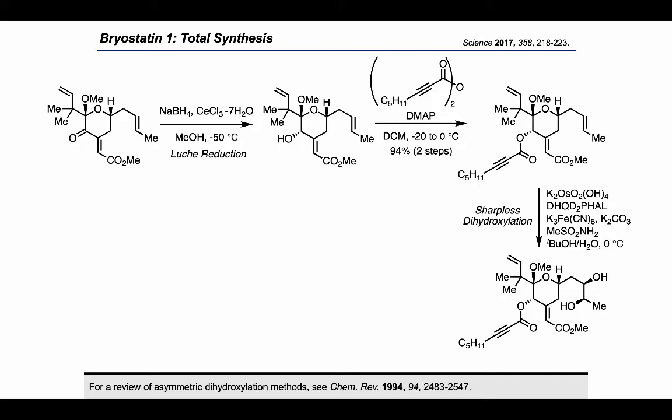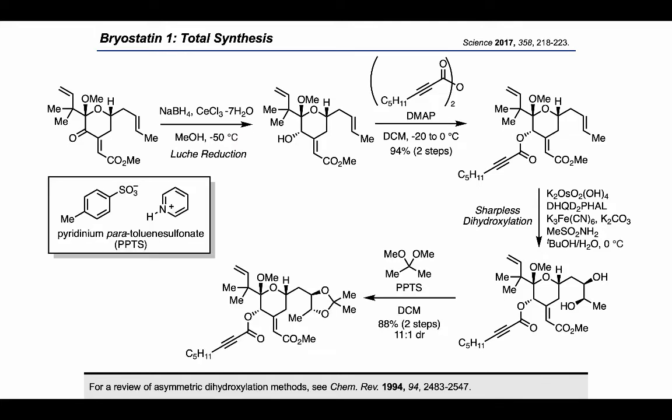The Sharpless dihydroxylation effectively installed two new stereocenters, placing both alcohols on the top face of the alkene. In the next step, the authors tied up those two alcohols in an acetonide ring to protect them. On the left-hand side of the molecule, the alkene was then cleaved to the aldehyde using ozonolysis with a thiourea quench.